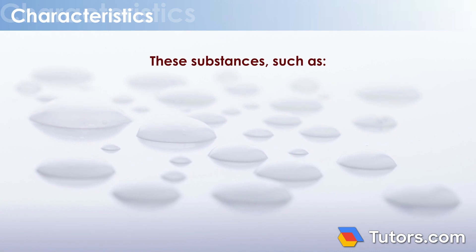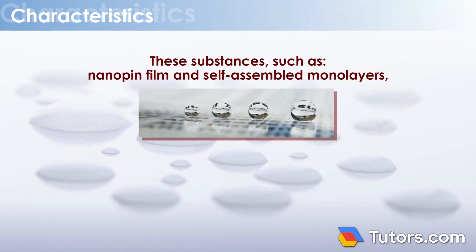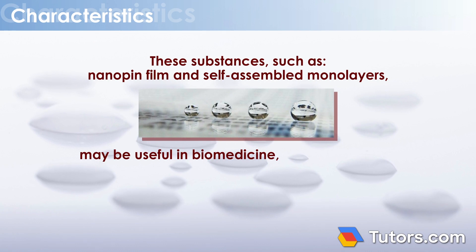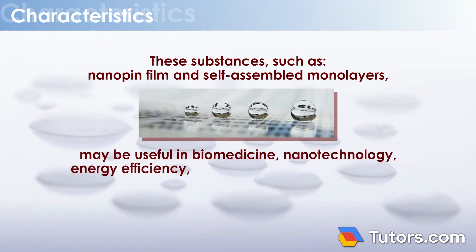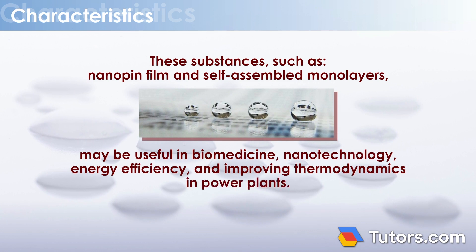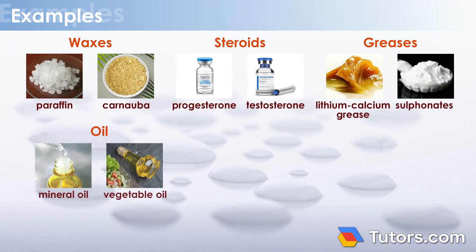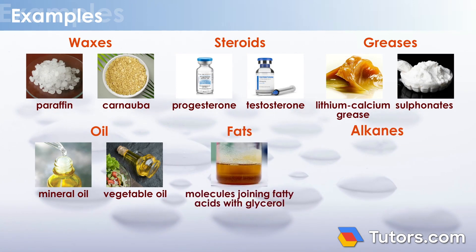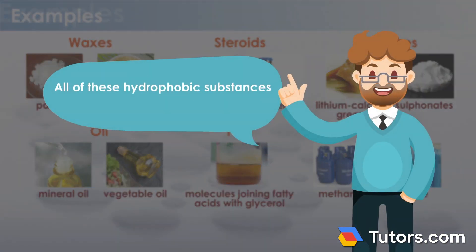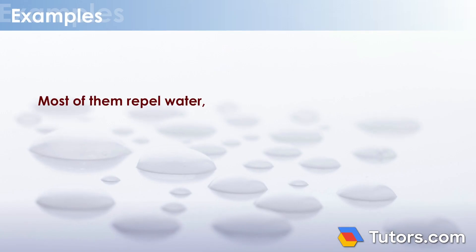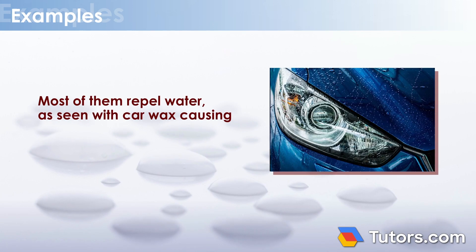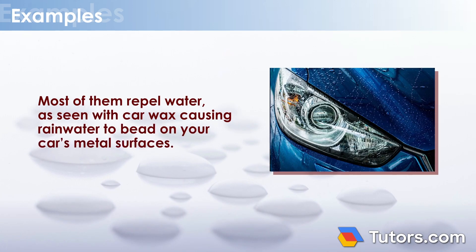These substances, such as nano-pen film and self-assembled monolayers, may be useful in biomedicine, nanotechnology, energy efficiency, and improving thermodynamics in power plants. Here are some examples of hydrophobic substances: waxes, steroids, greases, oils, fats, and alkanes. All of these hydrophobic substances do not dissolve in water. Most of them repel water, as seen with car wax causing rainwater to bead on your car's metal surfaces.